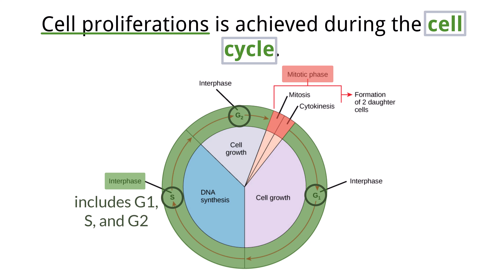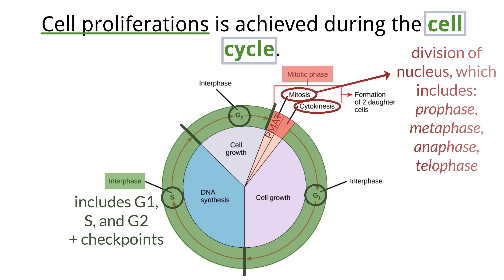There are also checkpoints that occur during interphase. Mitosis follows interphase and cytokinesis follows mitosis. Mitosis is a division of the nucleus and includes prophase, metaphase, anaphase, and telophase, which were discussed in a previous video. Cytokinesis is a division of the cytoplasm, resulting in two new daughter cells.